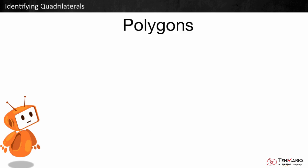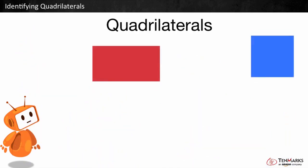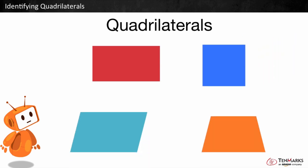Polygons are figures that are closed and made up of straight lines. Quadrilaterals are polygons with four sides. There are different kinds of quadrilaterals.